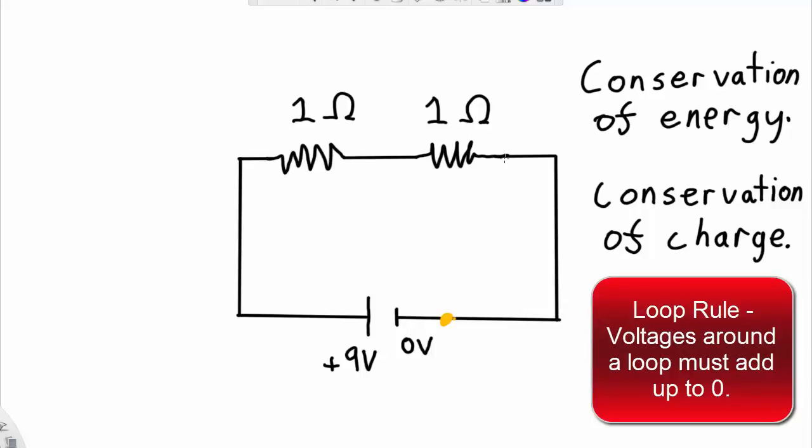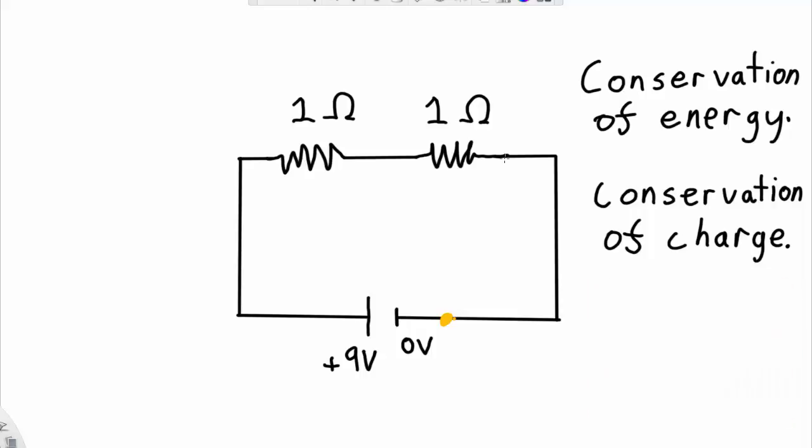So that there is what we call the loop rule, and that derives from conservation of energy. However, there is also conservation of charge. And this is what we call the node rule.